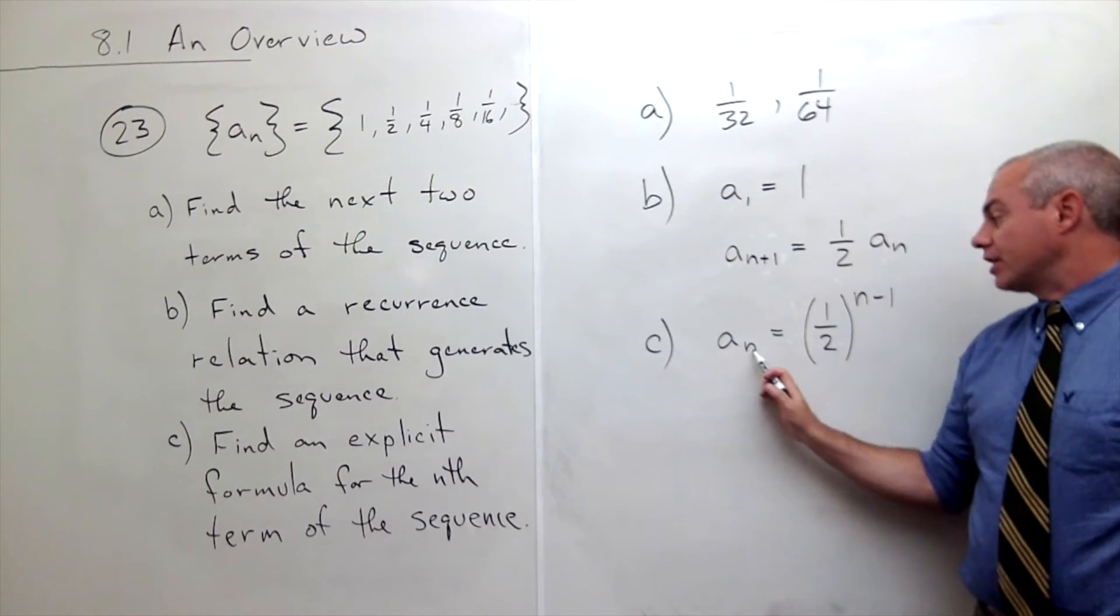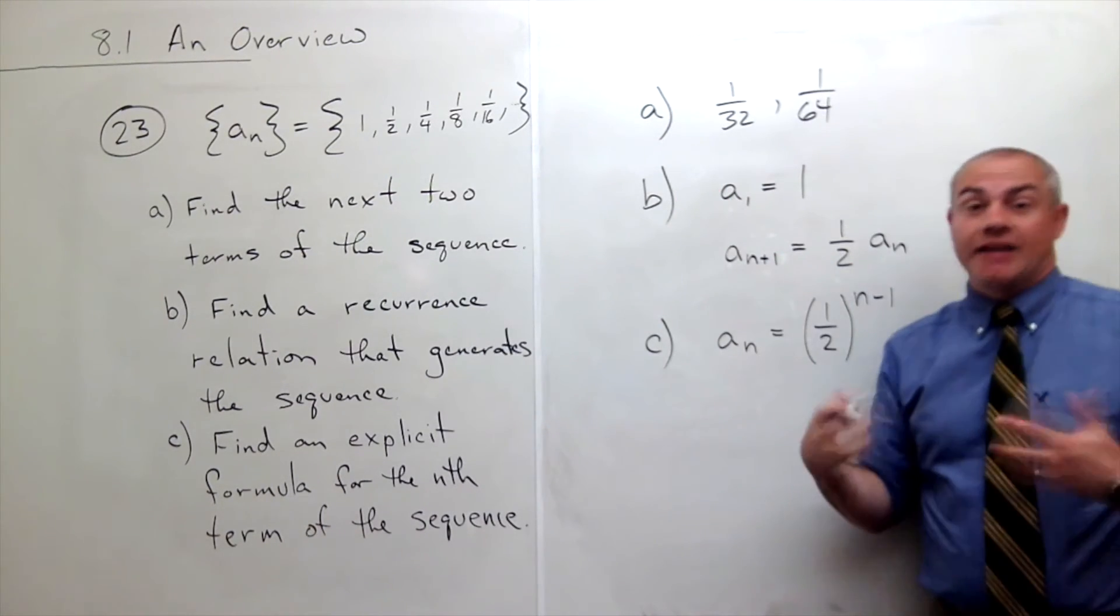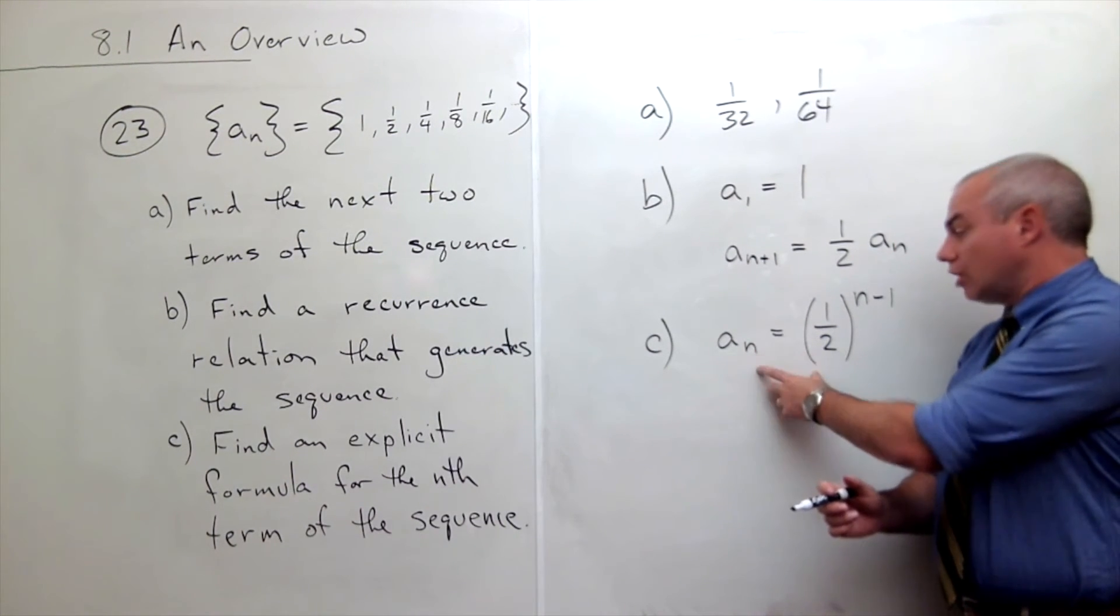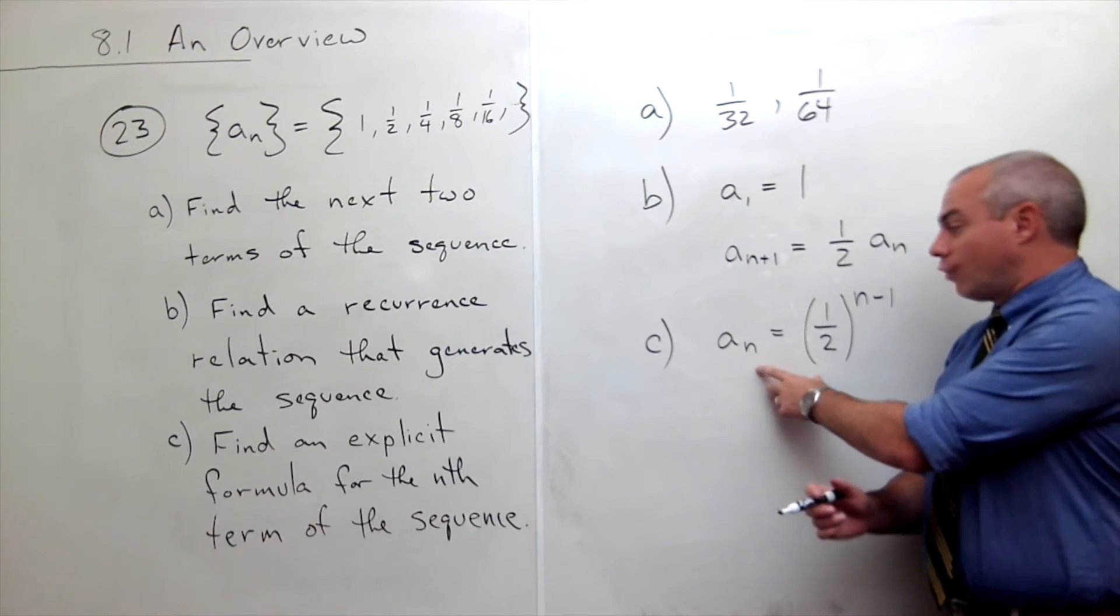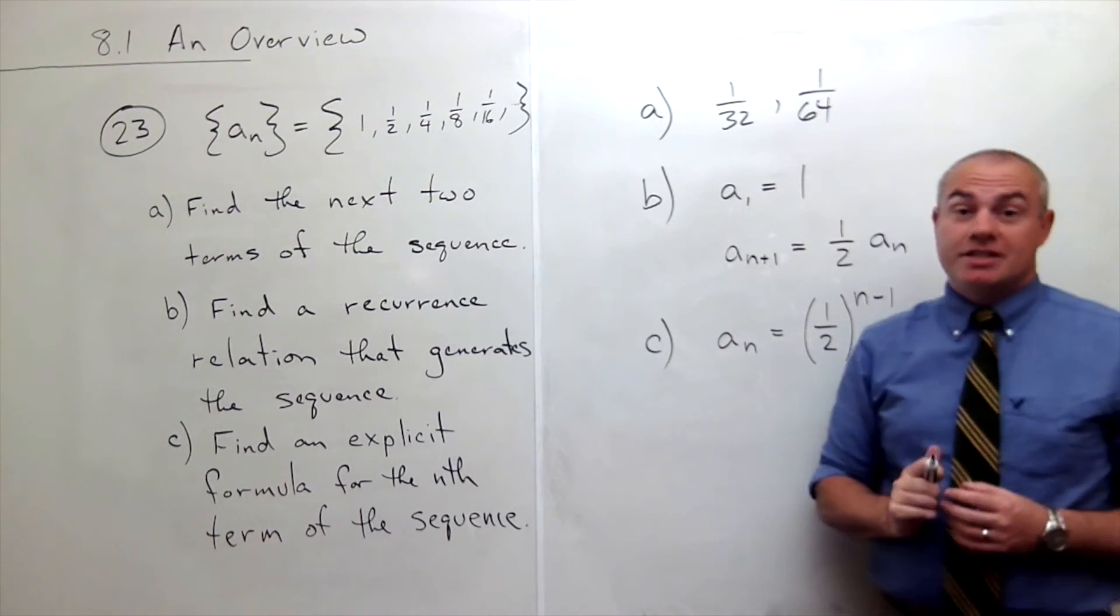If I plug in two, I get one-half to the first, which is a half. And you'll see that I could generate anybody in the sequence with this closed form formula for a sub n. So this is my explicit formula.